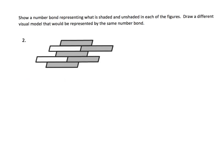It says, show a number bond representing what is shaded and unshaded in each of the figures, and then draw a different visual model represented by the same number bond. Let's start with identifying how many parts this is: one, two, three, four, five, six, seven parts.